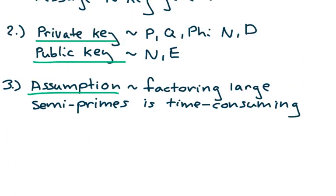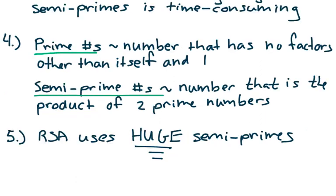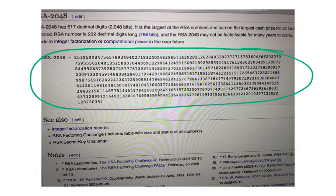The third thing to remember is the integral assumption that RSA encryption is based on: that factoring large semiprimes is time-consuming. The fourth is the definition of prime and semiprime numbers — a prime has no factors other than itself and one, and a semiprime is the product of two such prime numbers. Fifth, RSA uses huge semiprimes like RSA 2048, which is the product of two unknown prime numbers, P and Q.